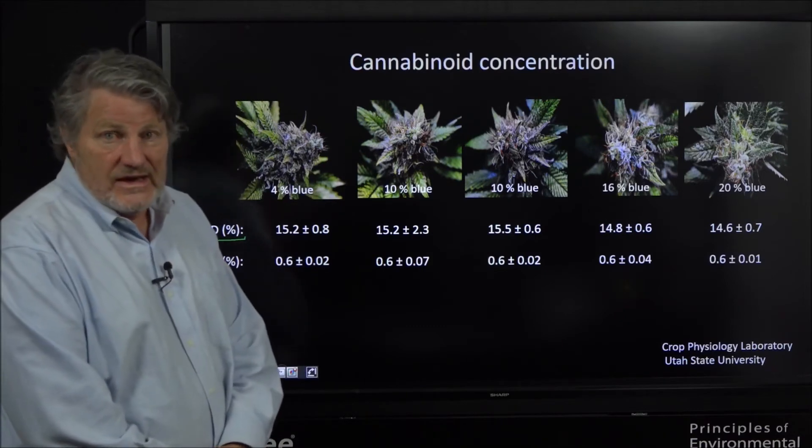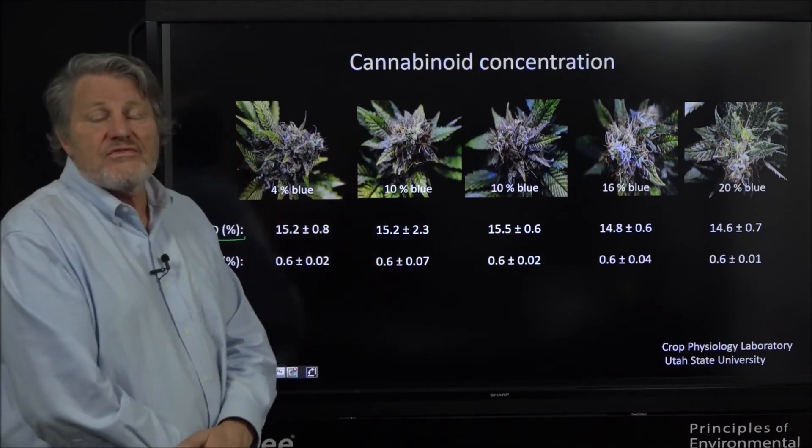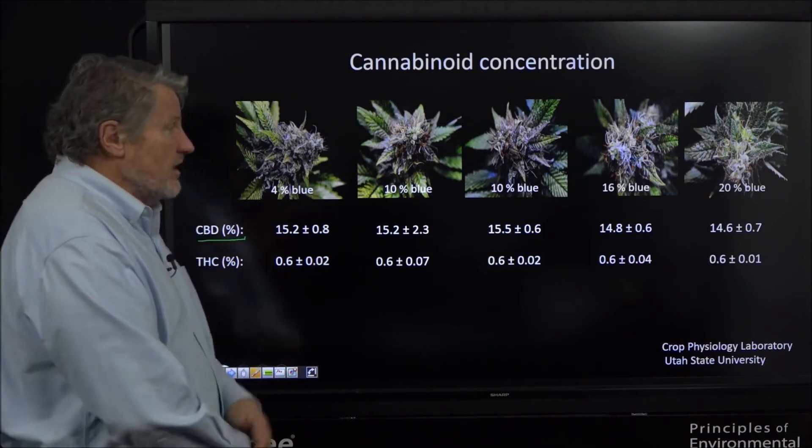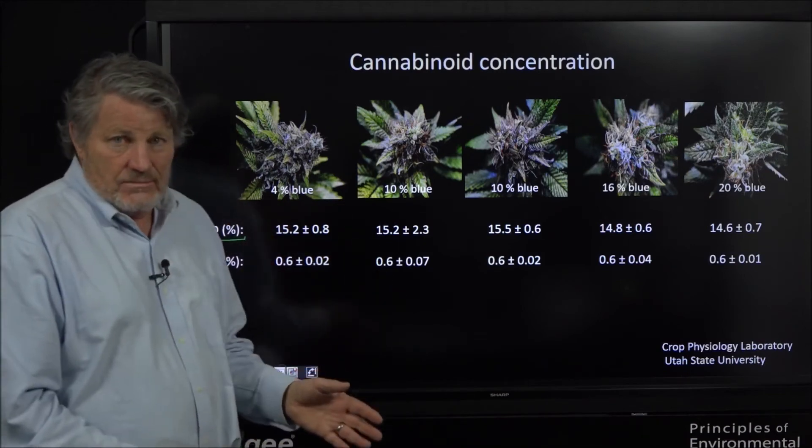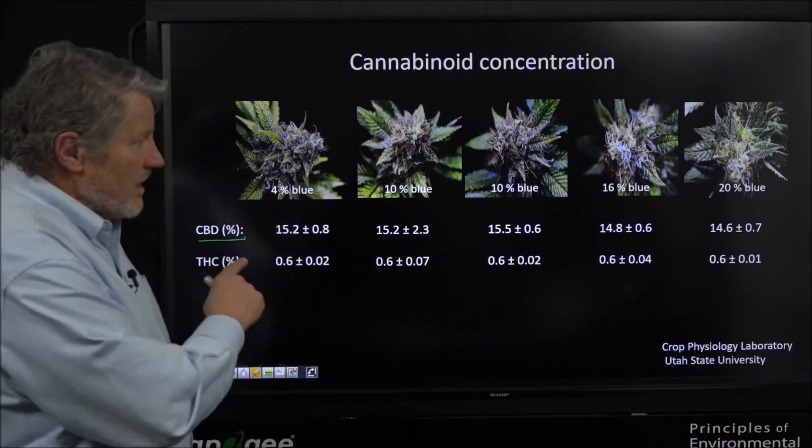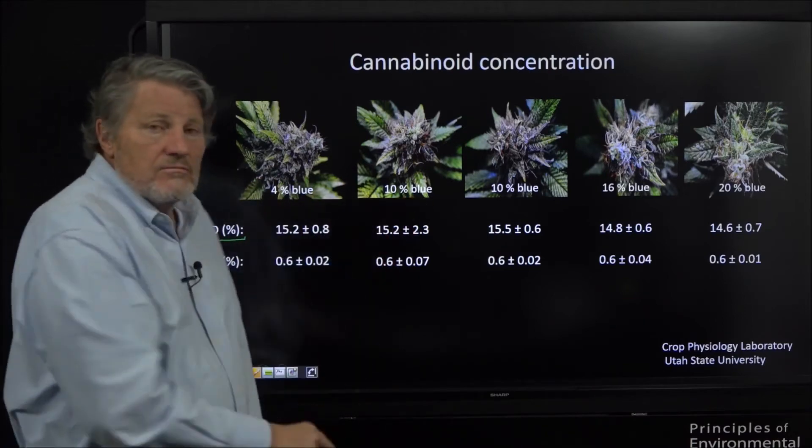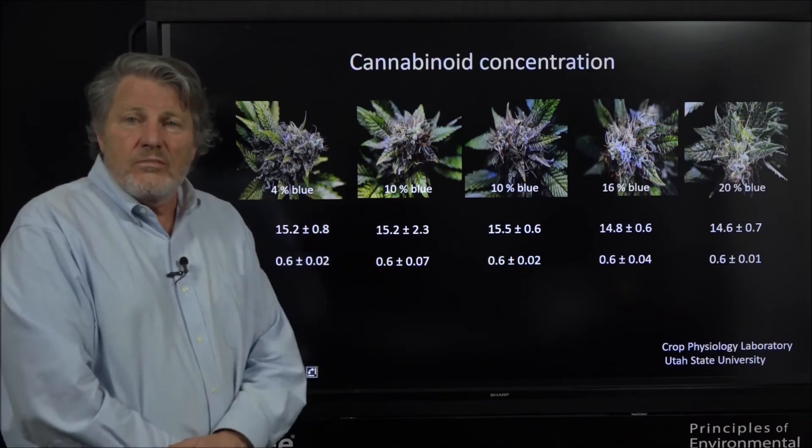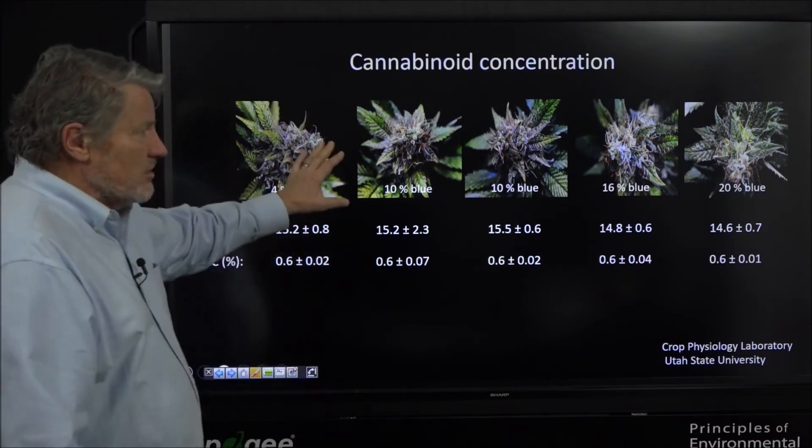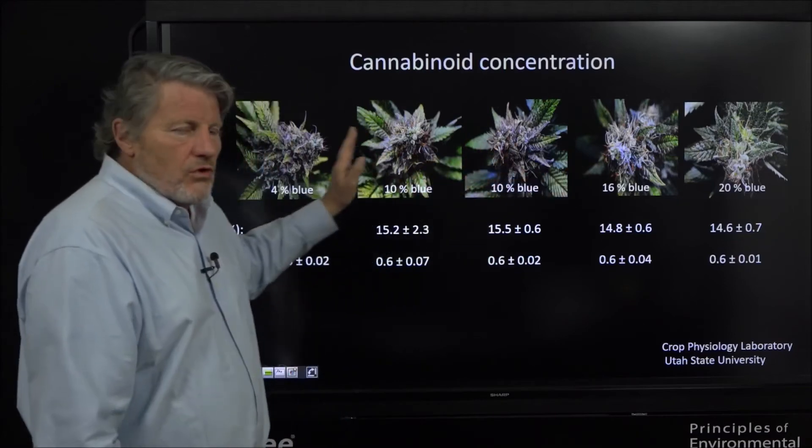So the choice of lamp for lighting cannabis should be based on the economics of the lights, not on the proposed hypothesized differences in cannabinoid synthesis and yield of the flowers - at least according to this study. We're replicating this study now but it's a significant finding. I'm still not recommending any particular lights. I'm just saying the LEDs were no better than the HPS, they were no worse than HPS.